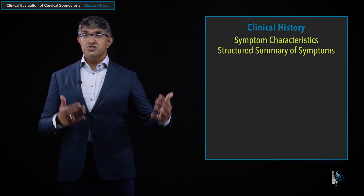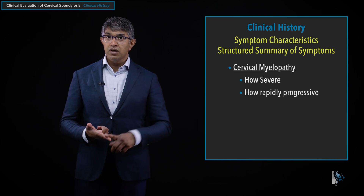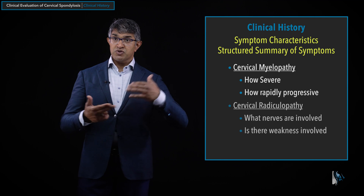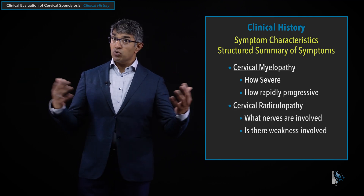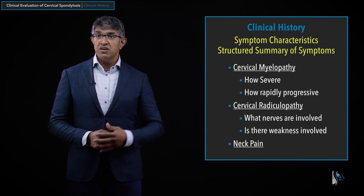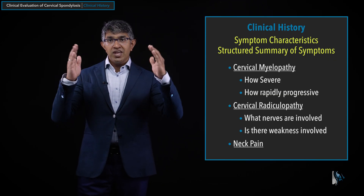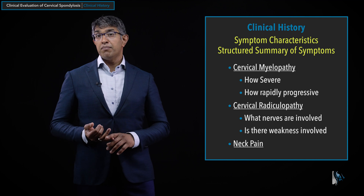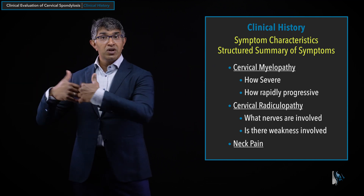Once I've talked to them about symptoms of myelopathy, radiculopathy, and neck pain — in whatever order is most relevant — I put together a structured summary. We cover cervical myelopathy: how severe is it, how rapidly progressive. Cervical radiculopathy: what nerves are involved, what side, is there weakness. And neck pain — for example, noting this is a 46-year-old with 70% right arm pain and 30% neck pain. Thinking about it in a structured way across these three symptom patterns.